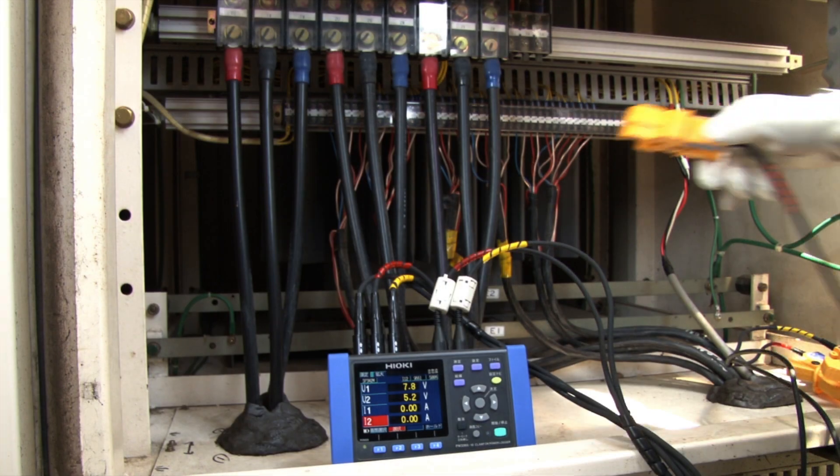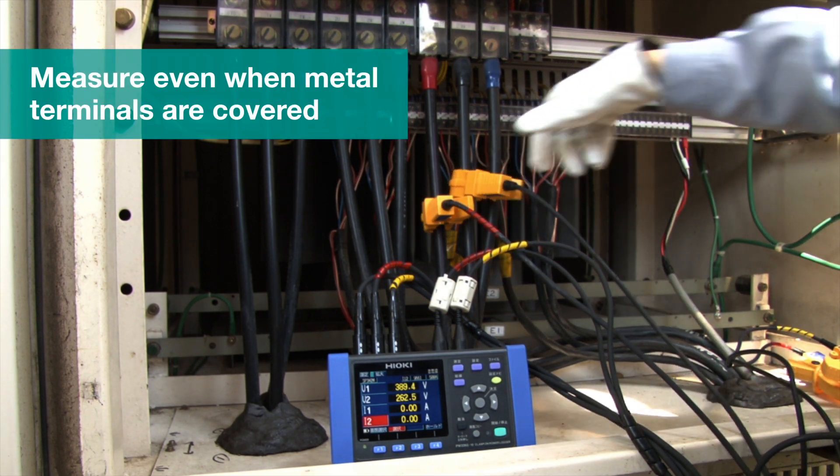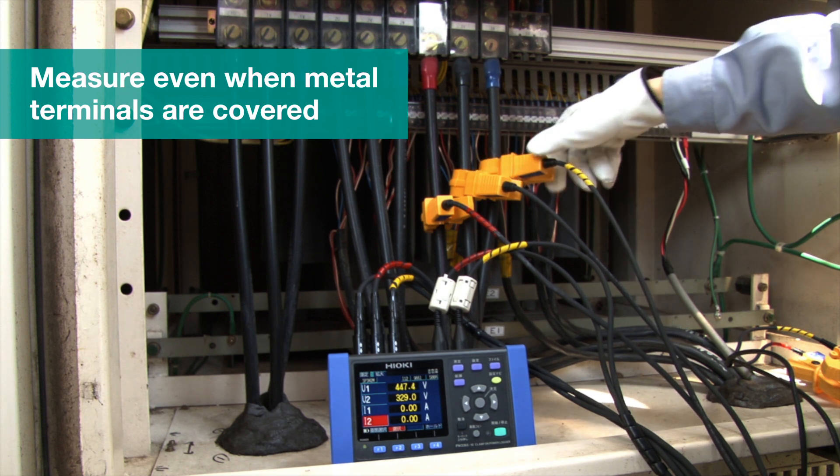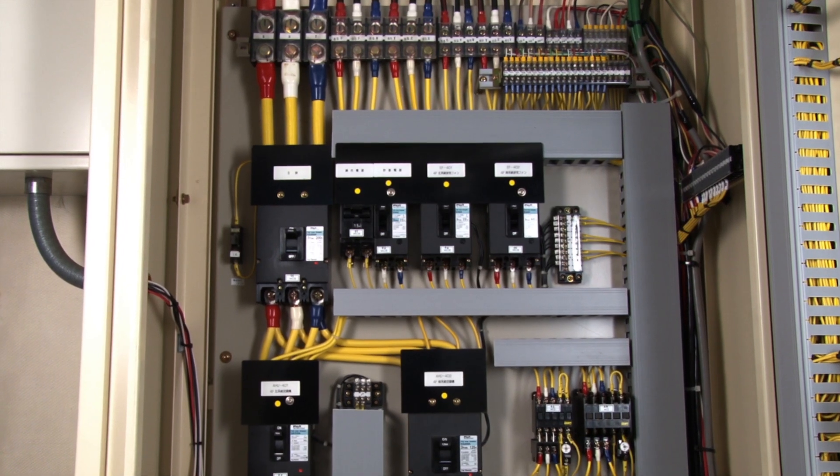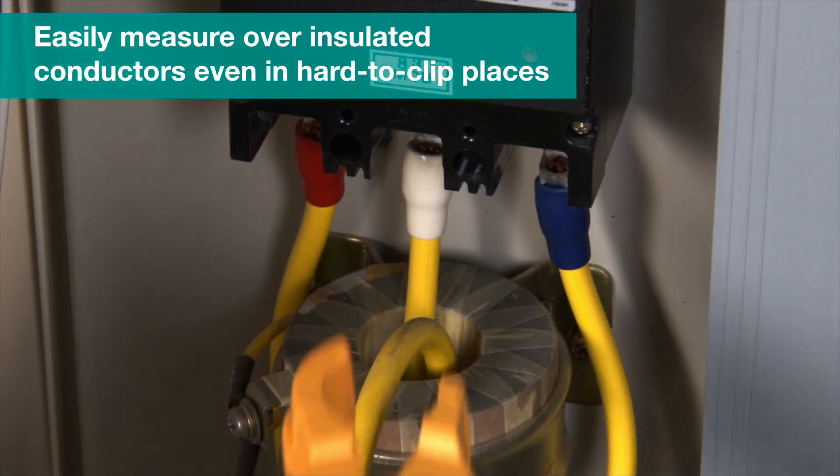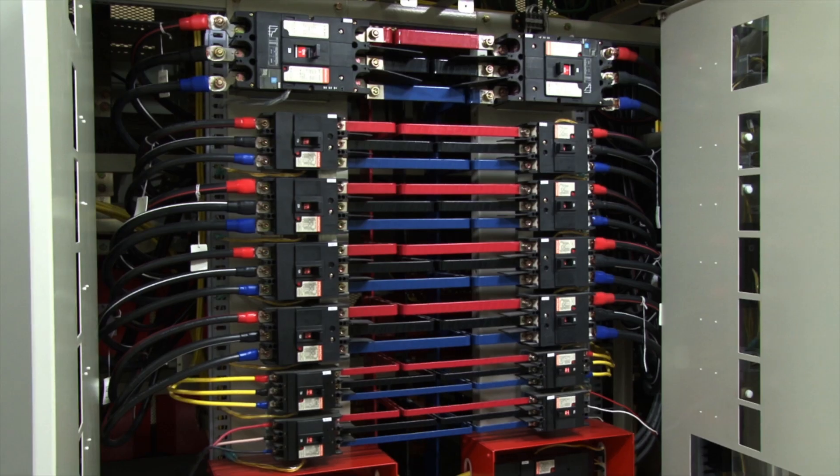The Hioki PW3365-20 clamp-on power logger is small enough to be installed in substation rooms to measure even when the metal terminals are covered and difficult to access. Simply clamp onto the cables. Crowded wiring is also not a problem. The strong clips can easily measure over insulated conductors even in hard to clip places.